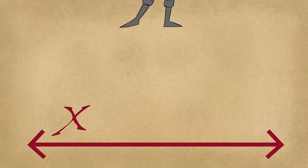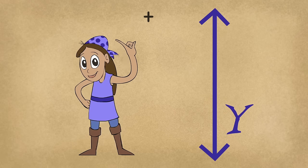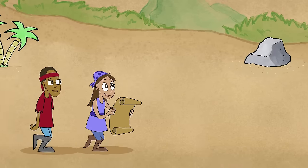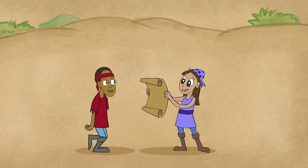On the x-axis, count left or right. On the y-axis, count up or down. That's how a coordinate's point is found.